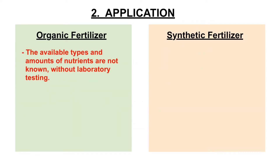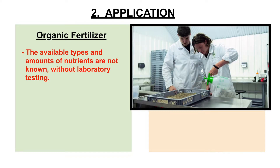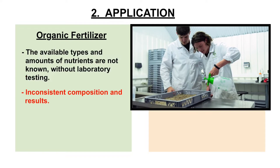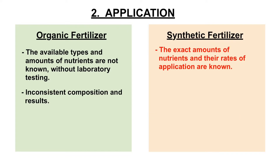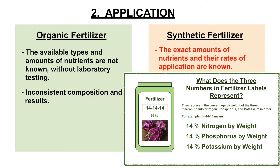2. Application. In organic fertilizers, the available types and amounts of nutrients are not known. Without laboratory testing, they have inconsistent composition and results. On the other hand, the exact amounts of nutrients available in synthetic fertilizers and their rates of application are known.